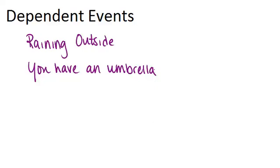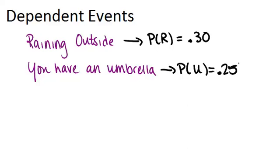If we think about these events separately, we could figure out the probability that it is raining on any given day. Let's just say for the sake of example that the probability that it's raining in general is 30%, and the probability that you have an umbrella in general, if you thought about all the days in a year and how many days you're carrying an umbrella around, is 25%.